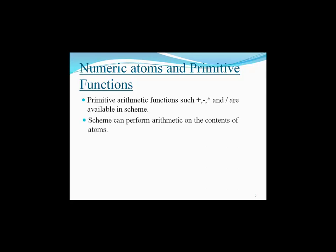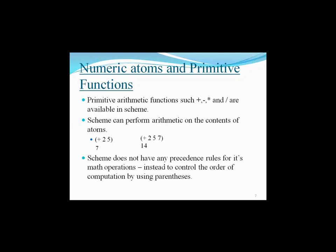To perform arithmetic on atoms, Scheme uses prefix notation. For example, (+ 2 5) returns 7, and (+ 2 5 7) returns 14. Scheme does not have any precedence rules for its math operations, so to control the order of computation, we have to use parentheses.